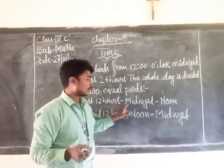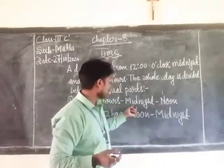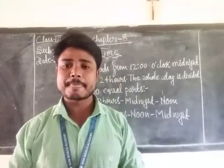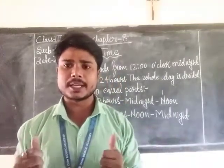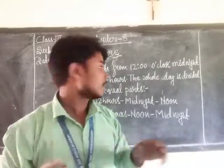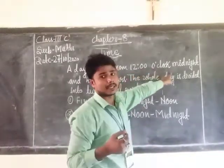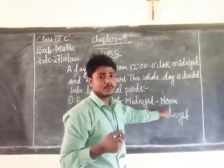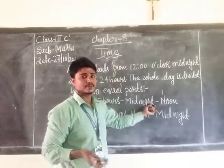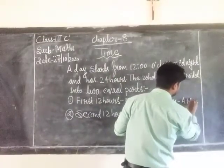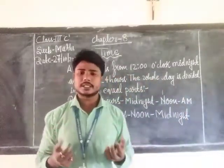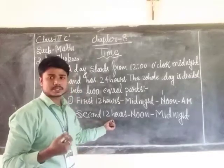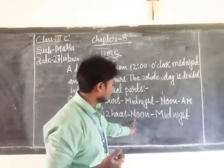The first 12 hours is from midnight to noon. Our day begins at 12 o'clock midnight. So, the first 12 hours is called midnight to noon, and for this period we are using AM. AM means anti-meridian.